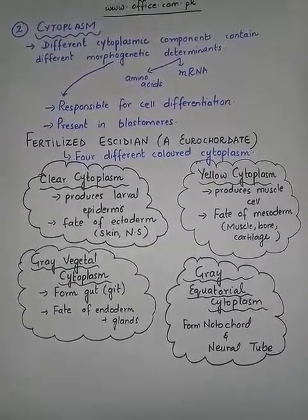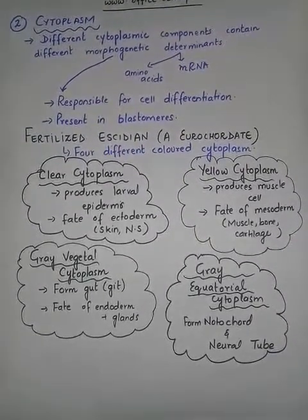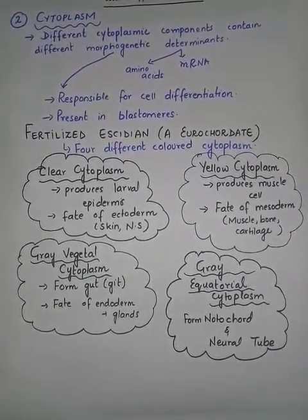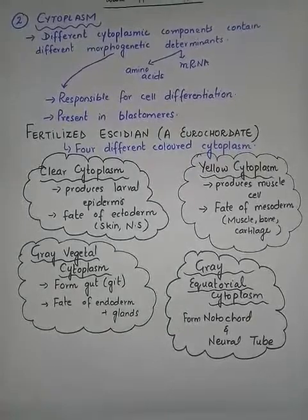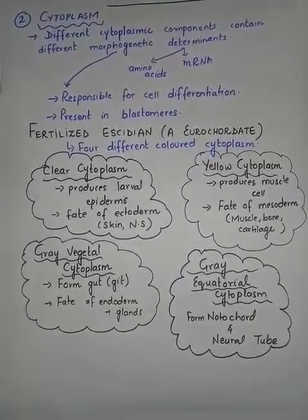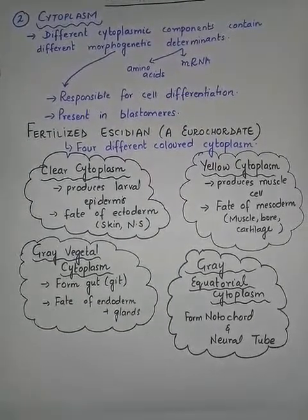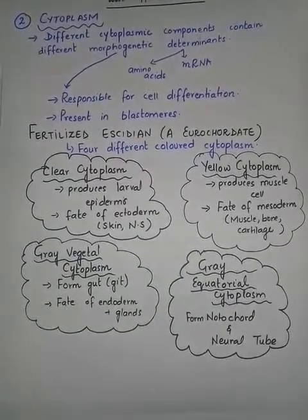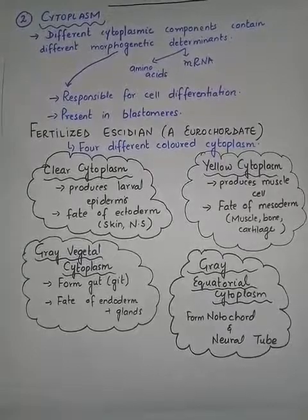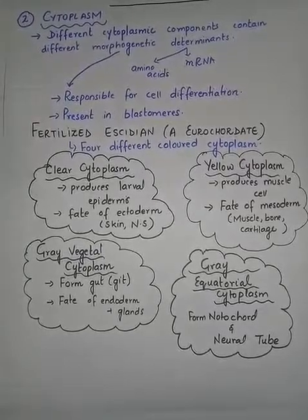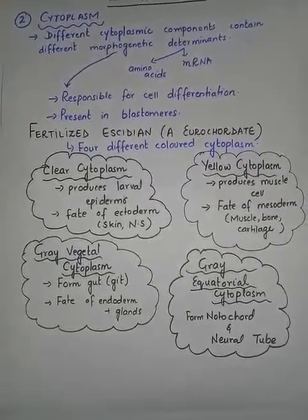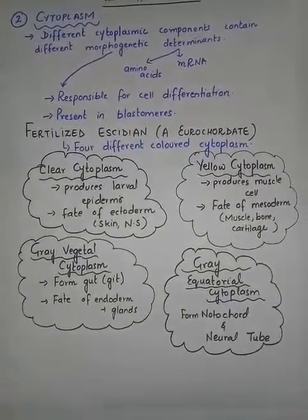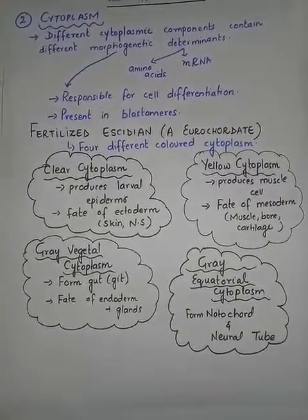When the fertilized egg of Ascidian was studied, four different colored cytoplasms were observed: a clear cytoplasm, a yellow cytoplasm, the gray vegetal cytoplasm, and the gray equatorial cytoplasm.